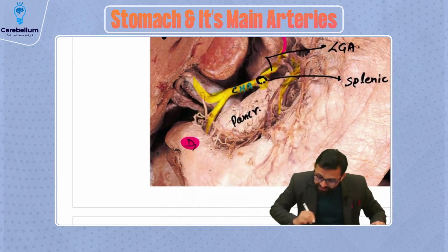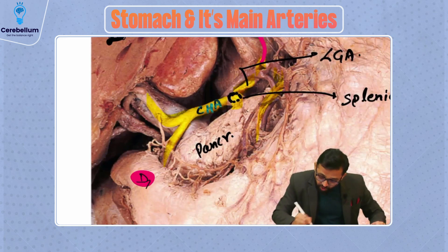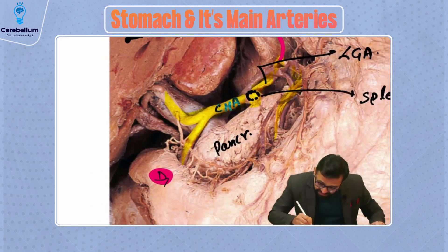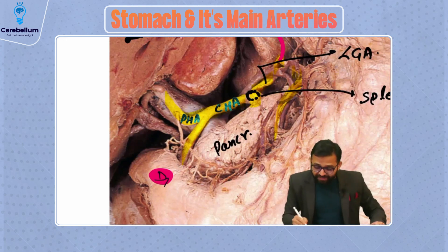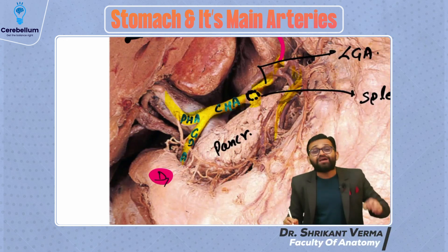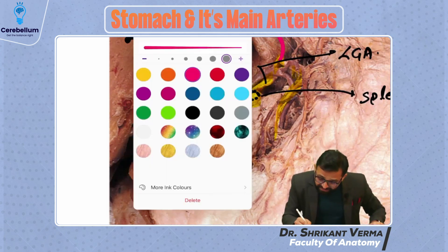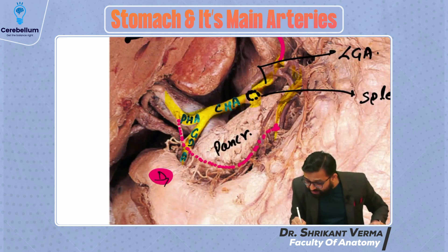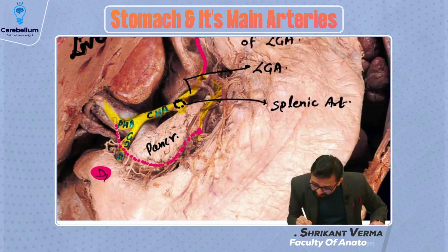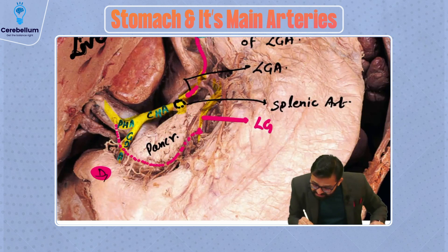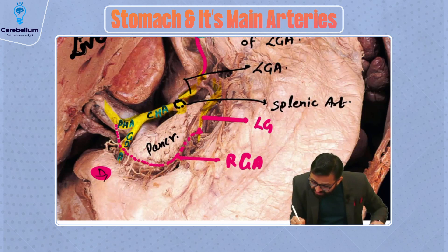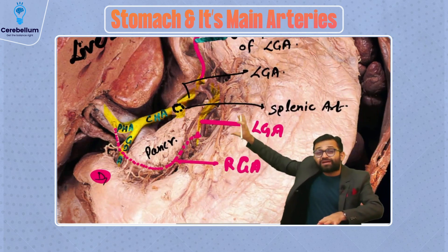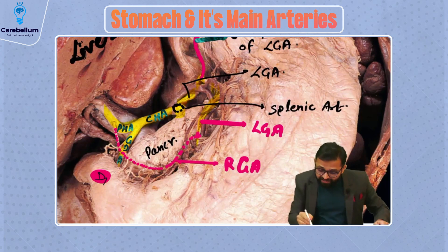This is our common hepatic artery, which is dividing into two — this is our proper hepatic artery and here is the gastroduodenal artery. You can see very clearly that this is our proper hepatic artery giving a branch running along the lesser curvature to meet with our left gastric artery. So this is definitely our right gastric artery — the left gastric artery and the right gastric artery anastomosis.